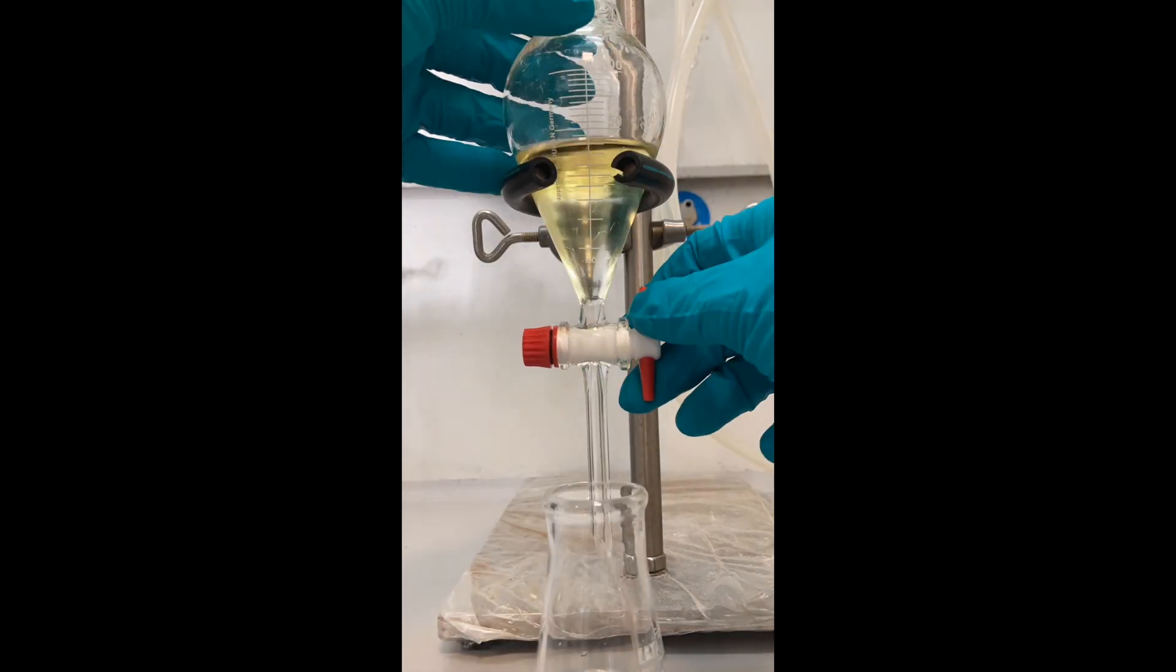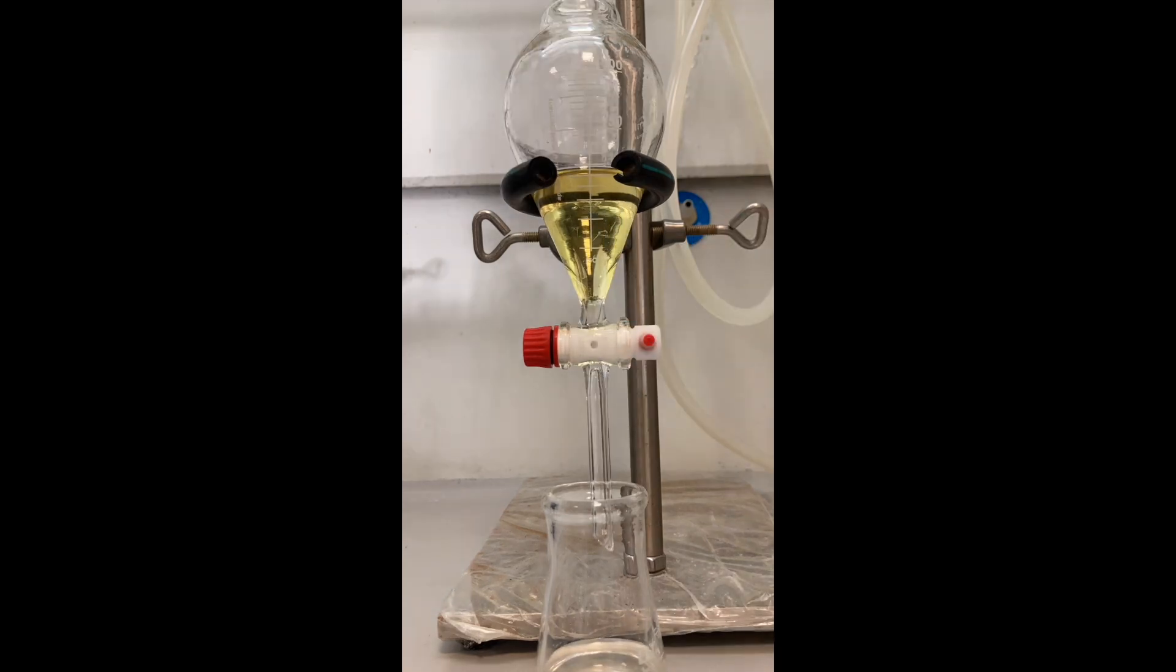And after drying the resulting organic extract with magnesium sulfate, I added some silica gel to prepare the dry loading for my flash column chromatography.